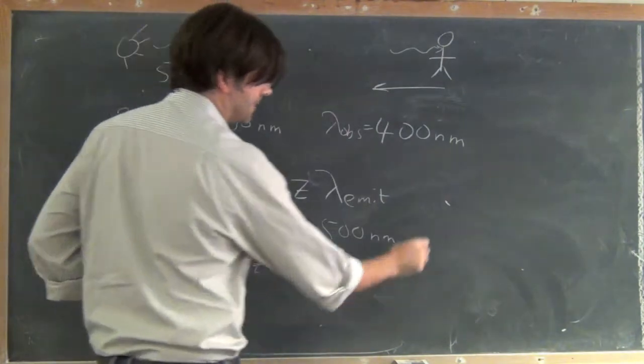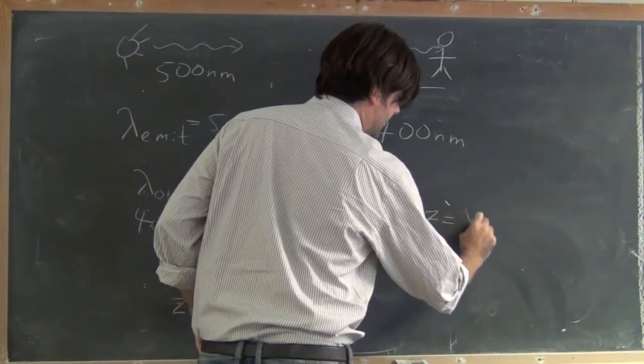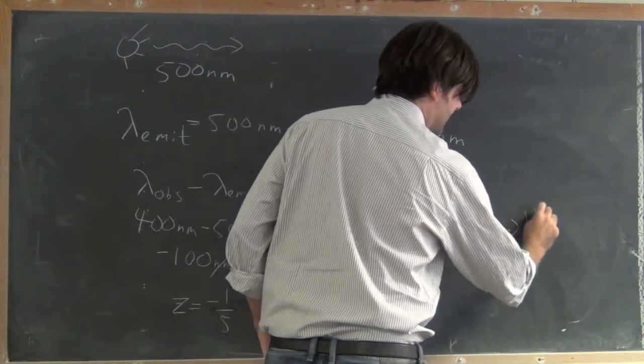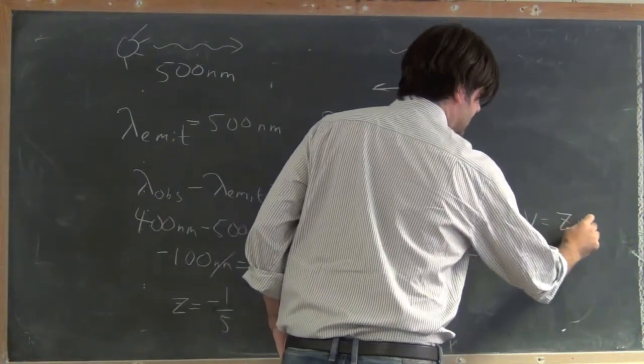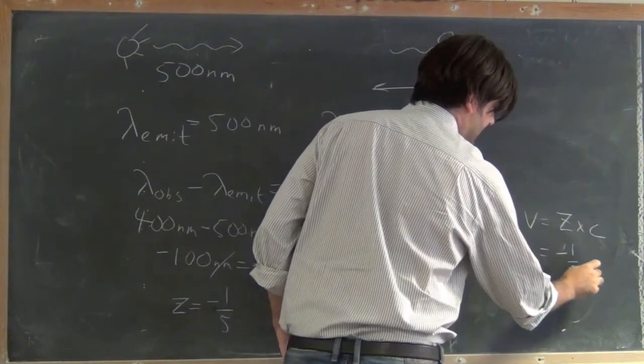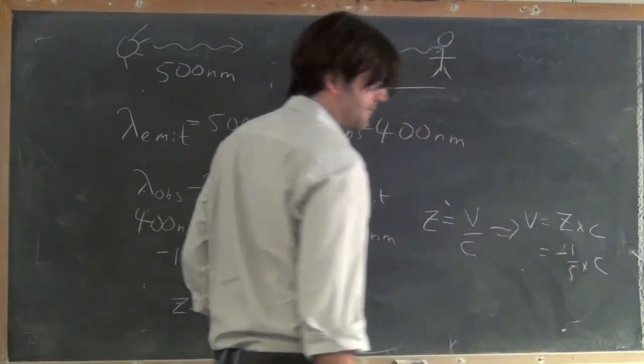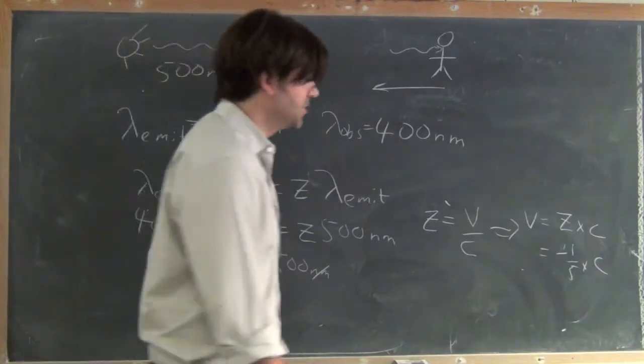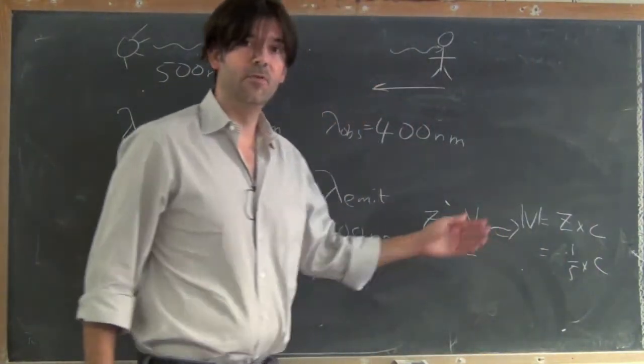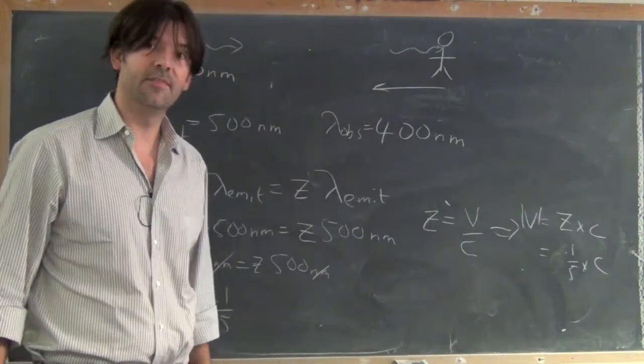And I also know that z is equal to v over c, so that tells me that v is equal to z times c, or I'm moving at minus 1 fifth times the speed of light. Or, if you want to take absolute magnitudes and not worry about the sign, I'm moving at a total speed of 1 fifth the speed of light.